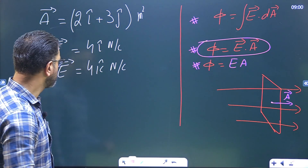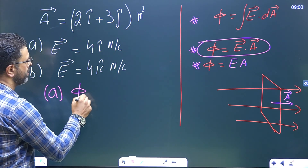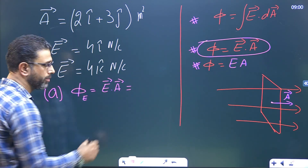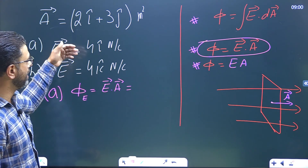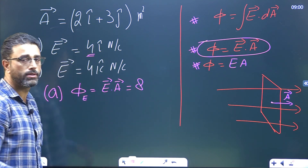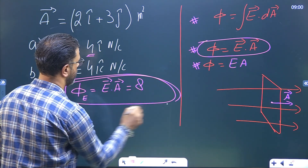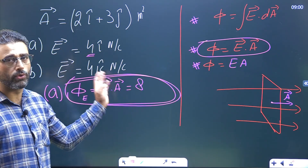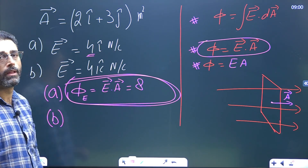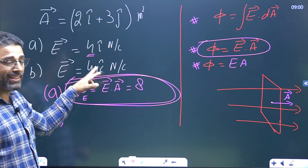For part A, the electric flux equals E dot A. We perform the dot product between E equals 4i and A equals 2i plus 3j. This has only an x-component, so 4 times 2 equals 8. The flux in the first case is 8 units.